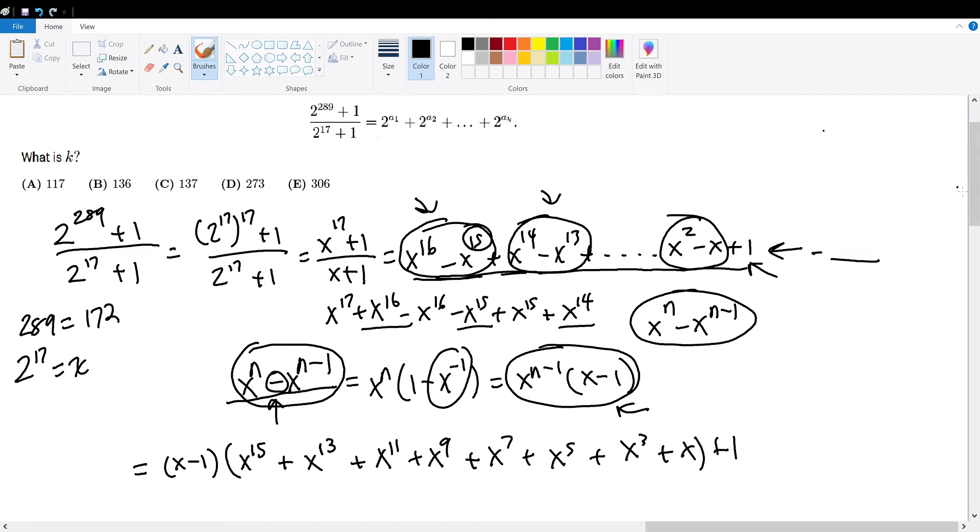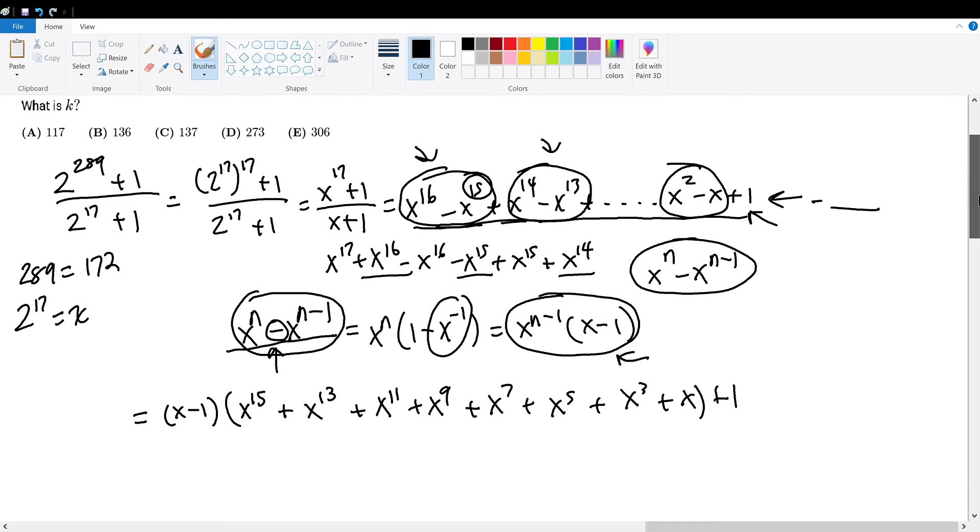And now that we have this out of the way, what can we further deduce about this term? We see here that this summation is written in the form of all summation, but this is not. So is there any way that we can alter it further more? Now it's a great time to reintroduce the fact that we assume x to be 2 to the 17th. So this is 2 to the 17th minus 1 times 2 to the 17th times 15 plus 2 to the 17th times 13, and you can substitute all the way to 2 to the 17th plus 1.